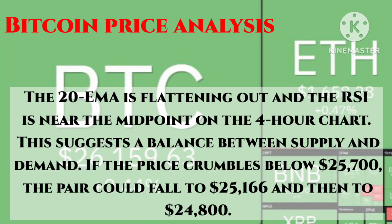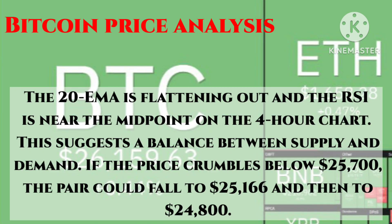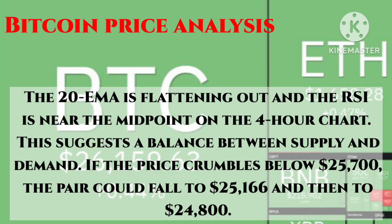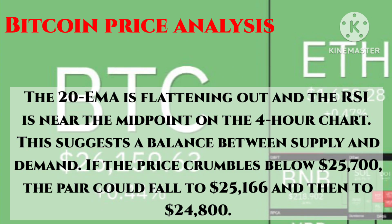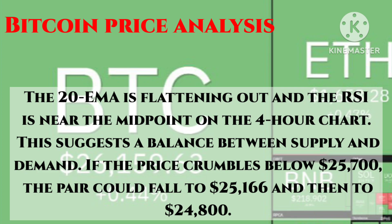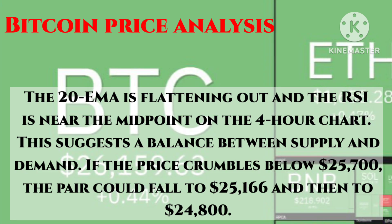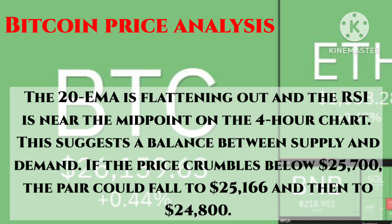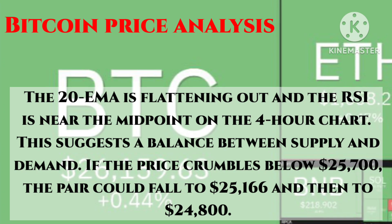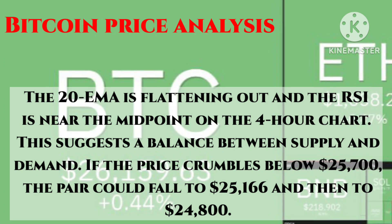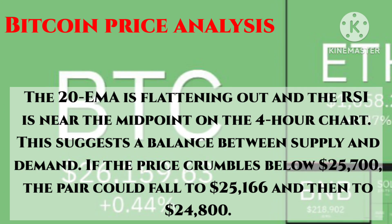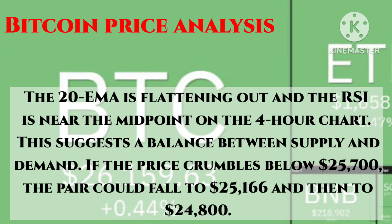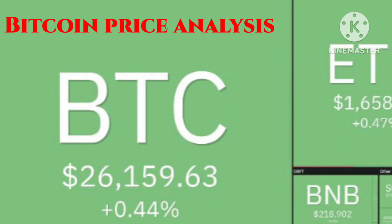The 20 EMA is flattening out and the RSI is near the midpoint on the four-hour chart. This suggests a balance between supply and demand. If the price crumbles below twenty-four thousand seven hundred dollars, the pair could fall to twenty-five thousand one hundred sixty-six dollars and then to twenty-four thousand eight hundred dollars.